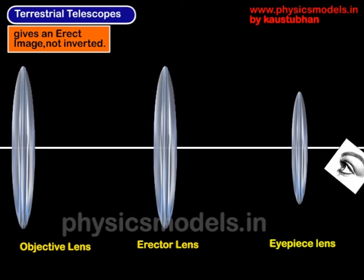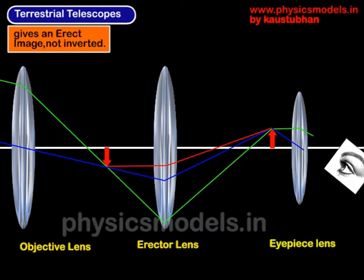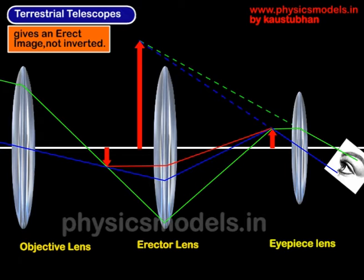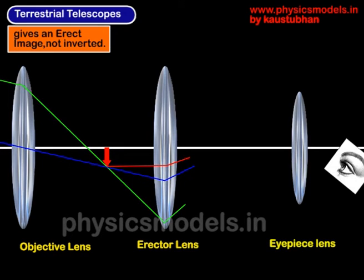We draw the three convex lenses. The rays from the distant object strike the objective lens at an angle, form intermediate image one, then form intermediate image two, and the eyepiece projects that to form the final image, which is erect and magnified. Now, the rays from the distant object need not always be parallel to the principal axis. So depending upon the size of the object, they could be at an angle from the extremities of the object. We draw the green and blue rays at an angle.